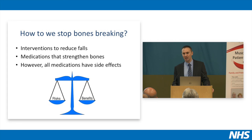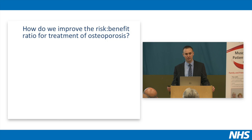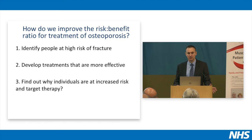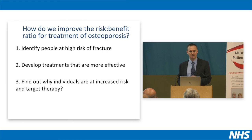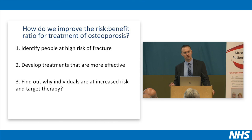However, all drugs potentially have side effects, so what we need to do is weigh up the risks of having the drug against the benefits in terms of reduced fracture risk. The key question is how do we improve the risk-benefit ratio of treatments — one of the big issues over the last 10 years. Firstly, we need to identify people who are at high risk of fracture. If somebody's risk of breaking a bone in the next 10 years is 50% and we halve that to 25%, that's a 25% absolute reduction in fracture risk. Whereas if their risk is only 4% and we halve it, we're only reducing it by 2%. So it's really important that we identify people at high risk of fracture.